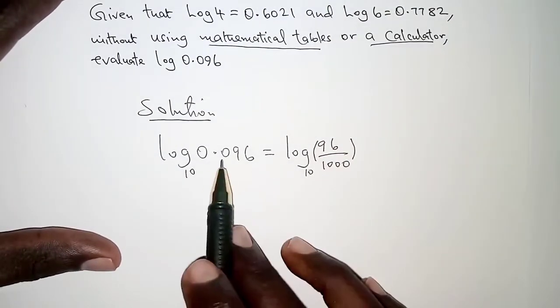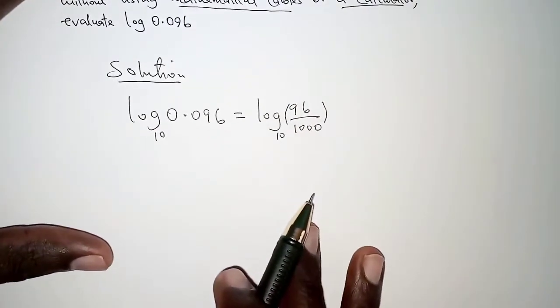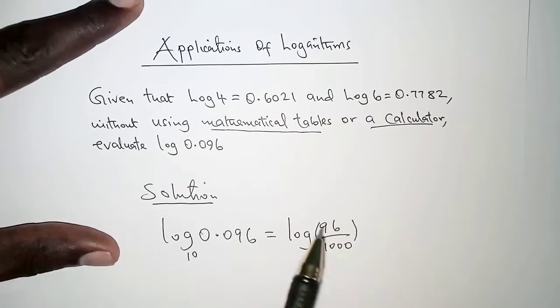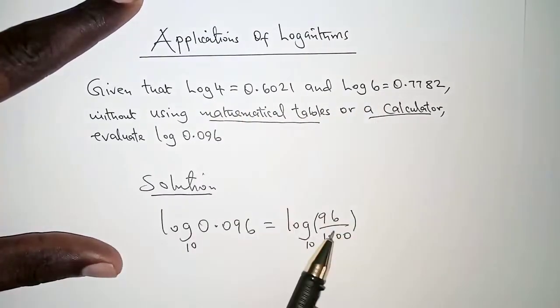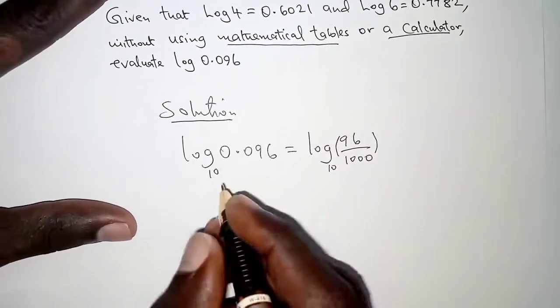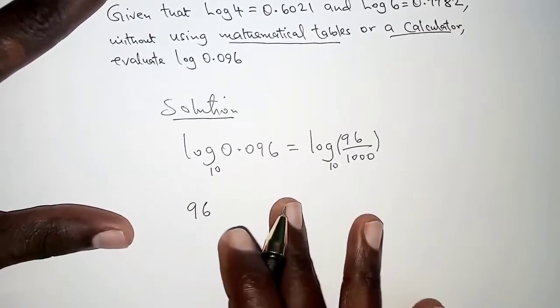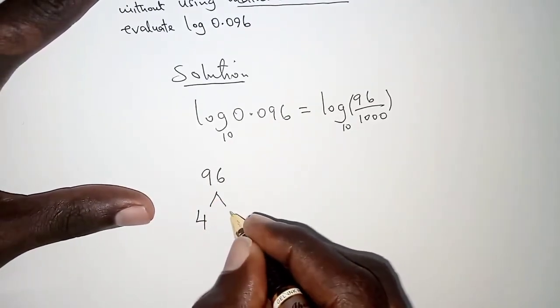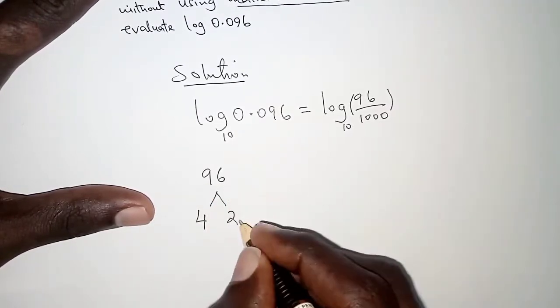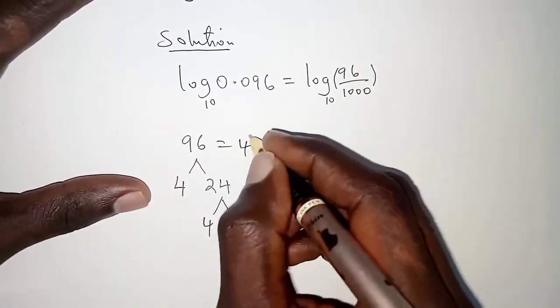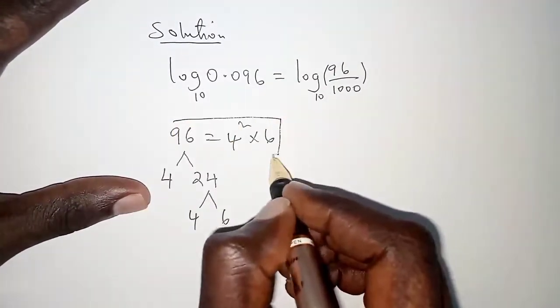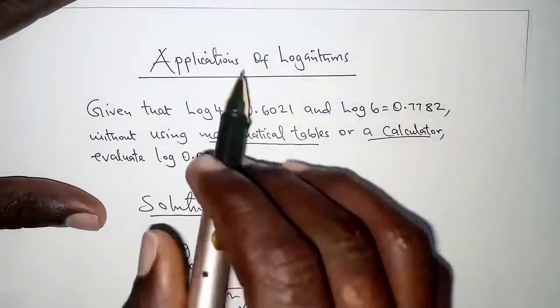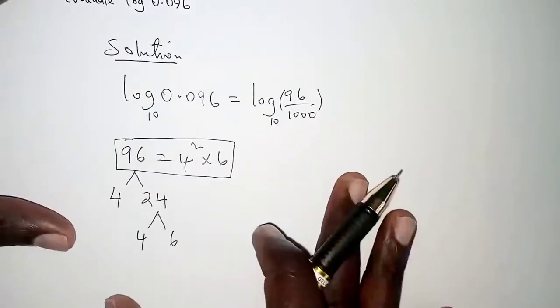Once we have expressed 0.096 as a fraction, we can find the factors of 96. We express 96 as a product of 4 and 6. Since 4 goes into 96 twice, we have 96 = 4² × 6. We need to express it as a product of 4 and 6 because we are given log 4 and log 6.